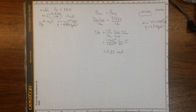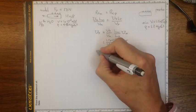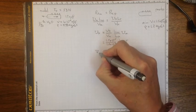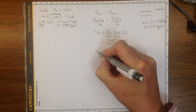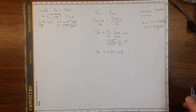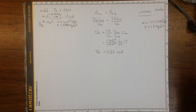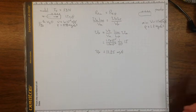That's the corresponding prototype velocity: 11.25 meters per second — about 40 feet per second, about 30 miles an hour, or about 50 kilometers per hour.